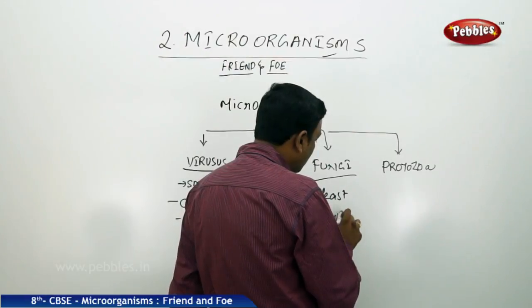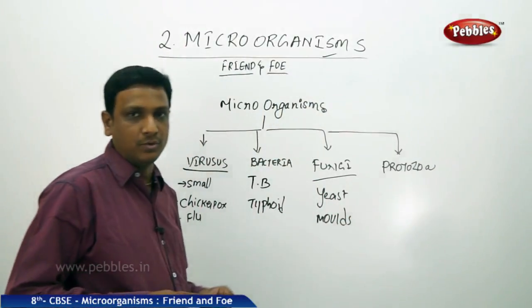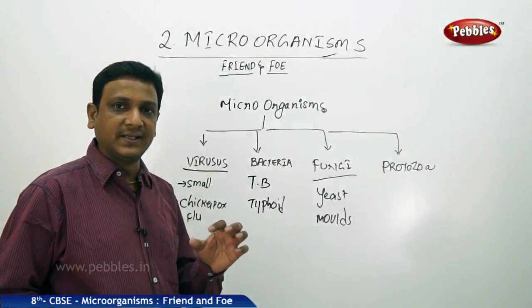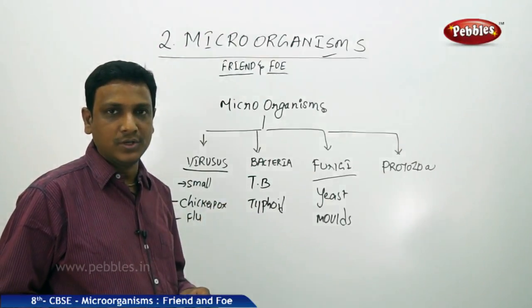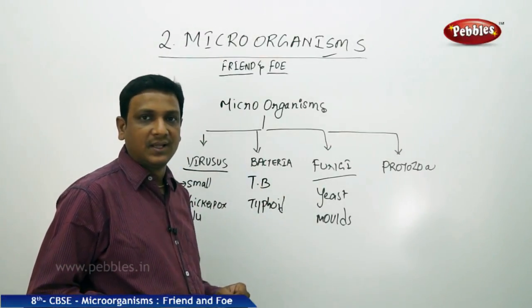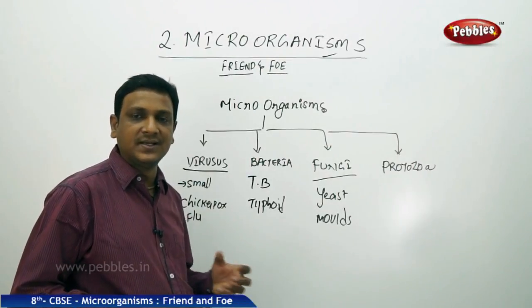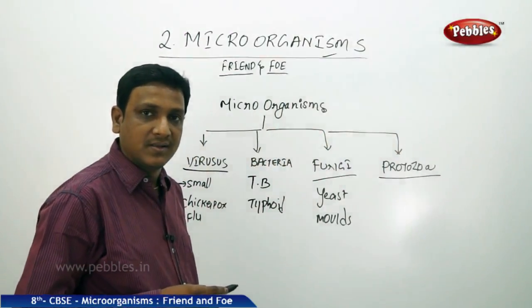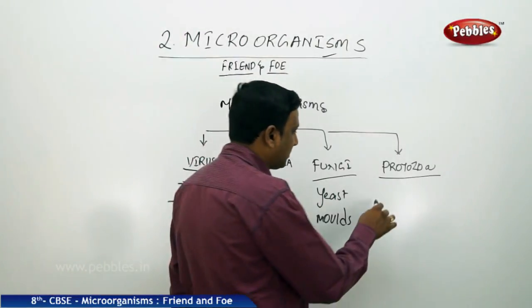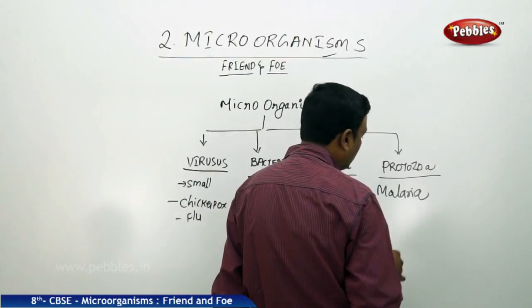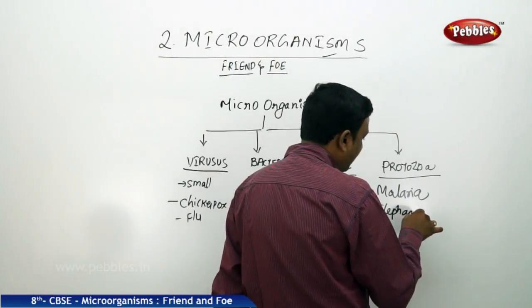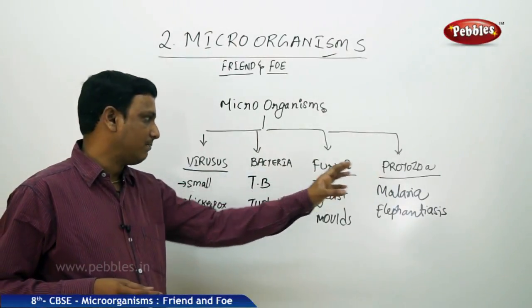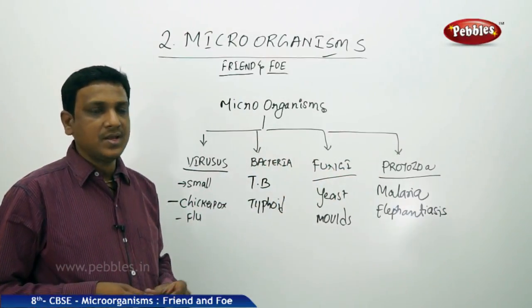The next one is fungi. Yeast is the unicellular fungus, and molds are found on rotten food. We discussed that if a moist bread slice is left undisturbed in a warm place for some time, mold growth is found - so mold and yeast are fungi. Many fungi also cause certain skin diseases and other problems. Protozoans also cause diseases like malaria and elephantiasis. Protozoans are much bigger compared to bacteria. These are the different categories of microorganisms.